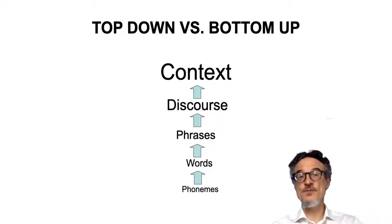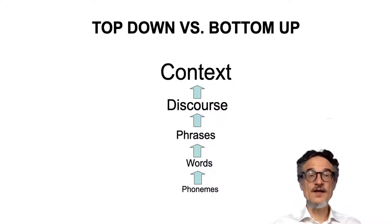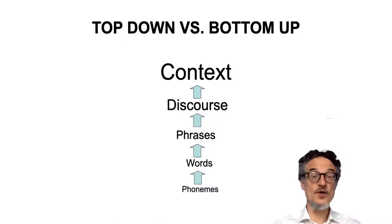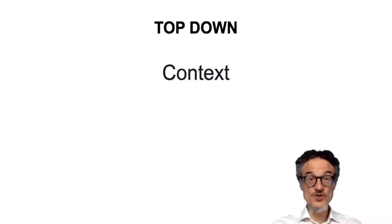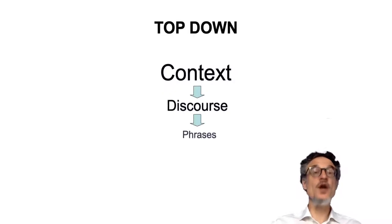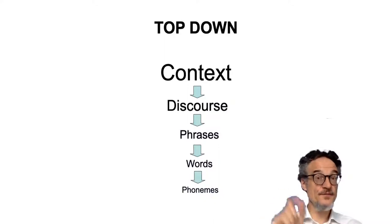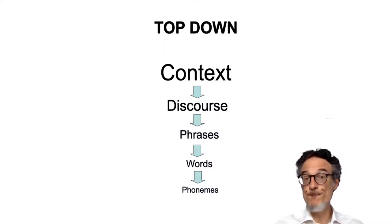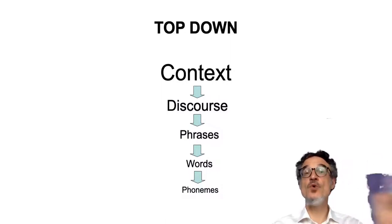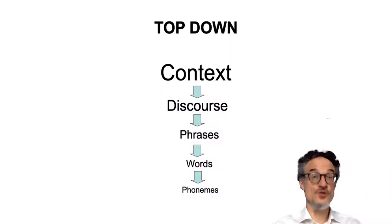And from the discourse we get the context. This is the idea of bottom-up processing, but in fact usually when we're listening we don't do bottom-up processing. We do what's called top-down processing. So we start with the context — we know what's happening. From the context we know what kind of discourse there will be. Because we know this, we know the kind of phrases we're going to hear and we just need to listen out for some words or some sounds. This is top-down listening.